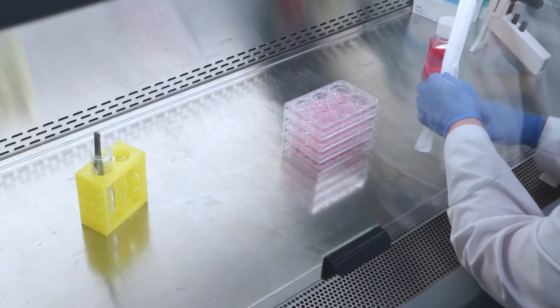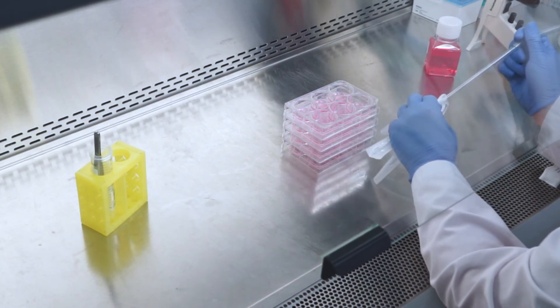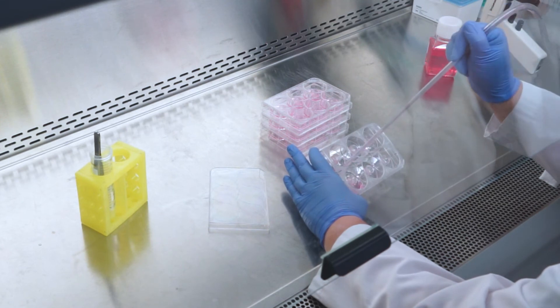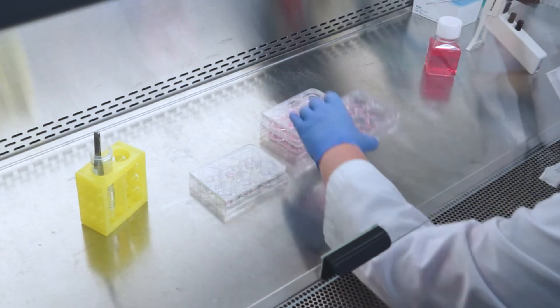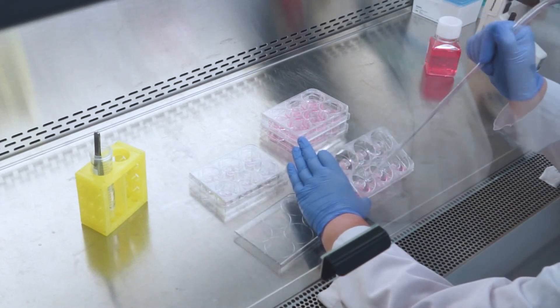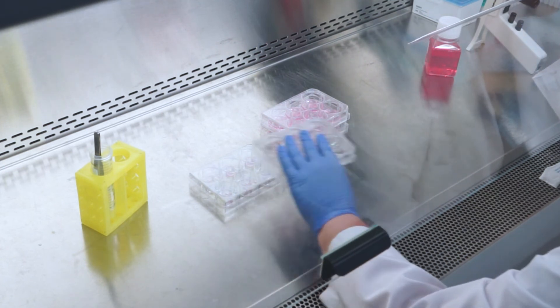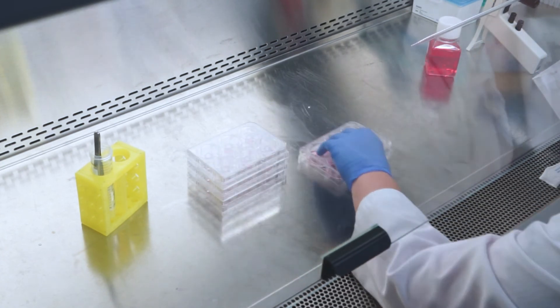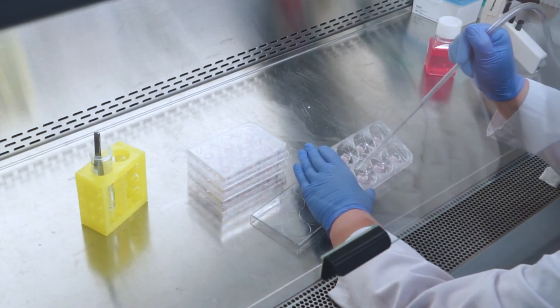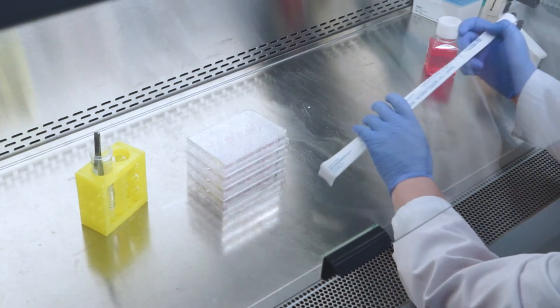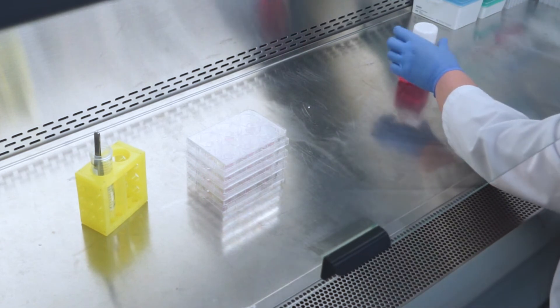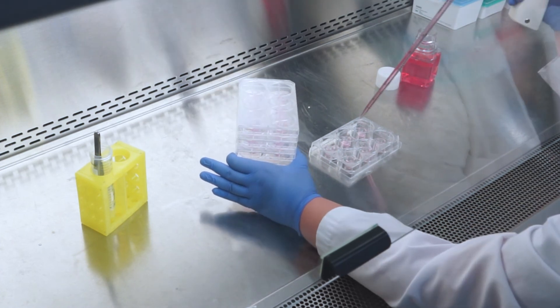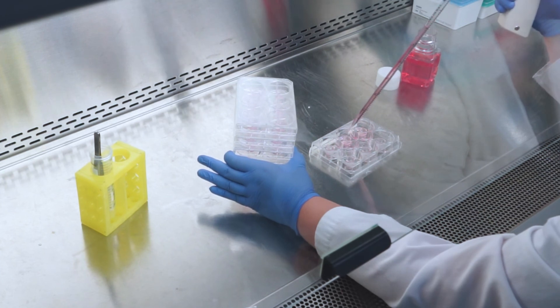10 to 15 minutes before the end of the equilibration period, pre-warm the assay medium to 37 degrees Celsius. At the end of the equilibration period, remove plates from the incubator. In a sterile tissue culture hood, aspirate the media from each well and replace with the fresh pre-warmed medium. Tissue equilibration is now complete and your EpiAirway tissues are ready for your experiment.